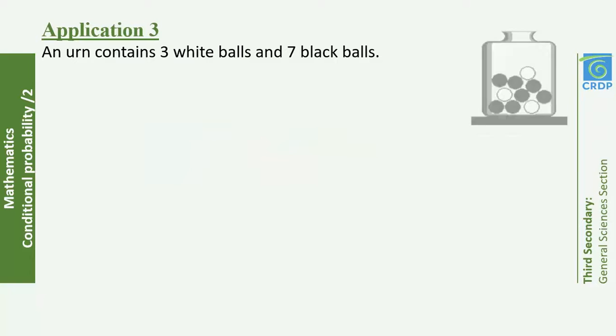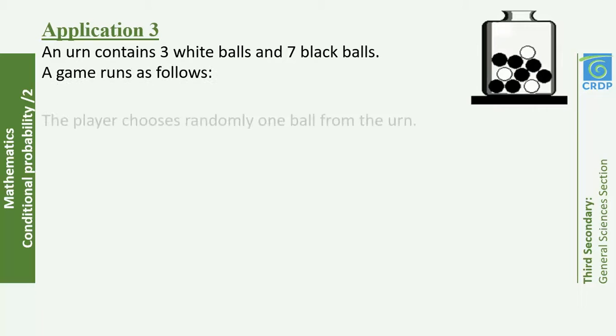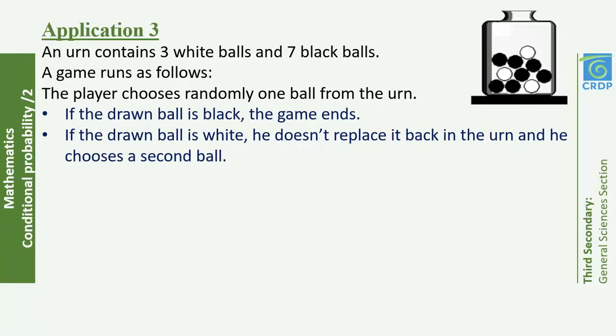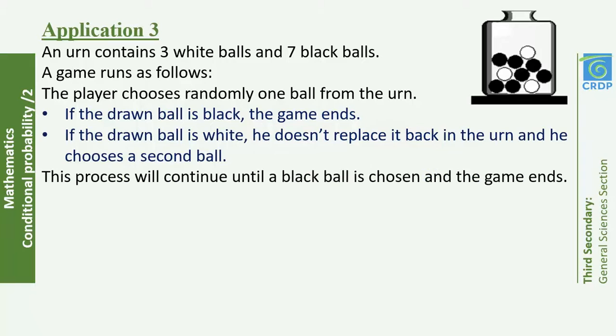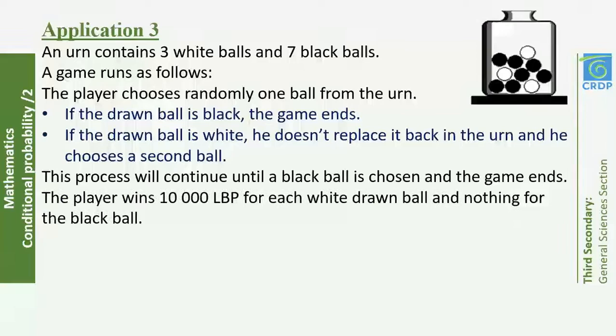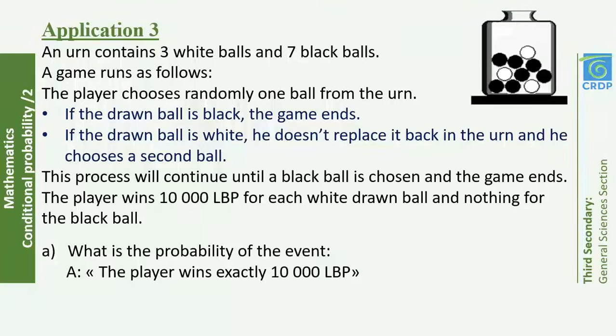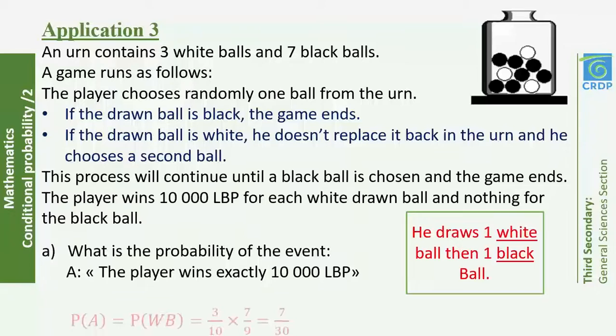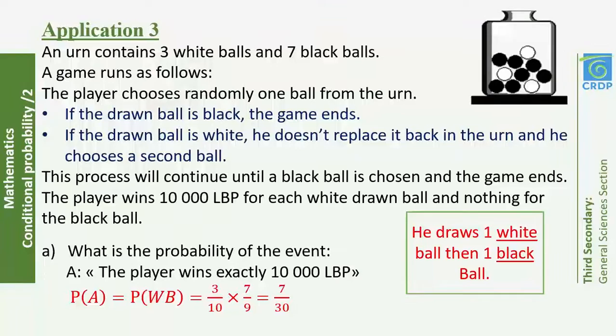Application 3: An urn contains 3 white balls and 7 black balls. A player randomly draws one ball: if it's black, the game ends; if it's white, he does not replace it and draws again. This continues until a black ball is drawn. The player wins 10,000 Lebanese pounds for each white ball drawn and nothing for the black ball. Part A: What is the probability that the player wins exactly 10,000 Lebanese pounds?